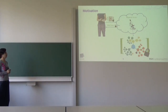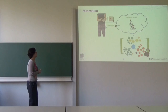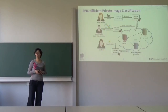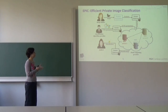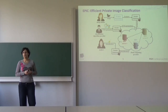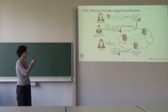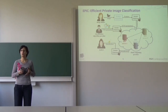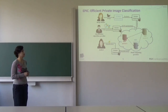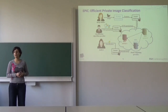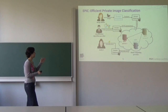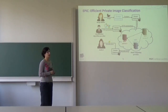Let me give you an overview of our system. EPIC has three main components: feature extraction based on transfer learning, support vector machine classification, and multi-party computation. It can work with four different types of entities, but it can also work with only two. We always need an image holder and a classification algorithm provider, and potentially also an analyst who receives the classification result, and a cloud computing provider.